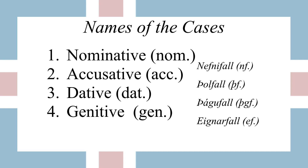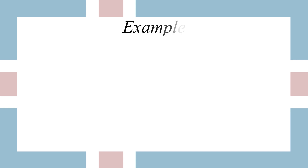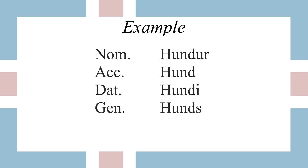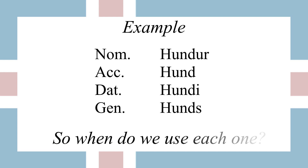Here's an example of a word in its different cases. This is the word for dog: hundur. That top form, the nominative form, is what you'll see in the dictionary. The other words are forms of that word in each of the cases — so there are four forms for the word dog: hundur, hund, hundi, and hunds. You're probably looking at that and thinking, why? Why are there four words? And that's what this video is about — when do we use each one?